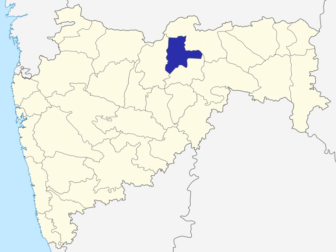It is bounded on the north by Amaravadi district, to the east by Amaravadi district and by Washam district, to the south by Washam district, and to the west by Buldana district. Washam was earlier a part of Akola till 1999.